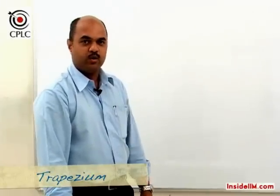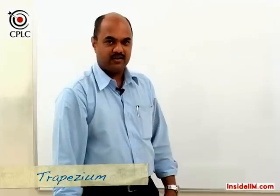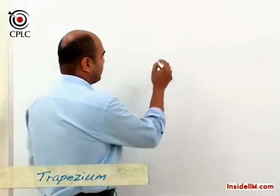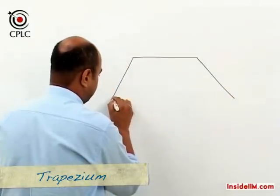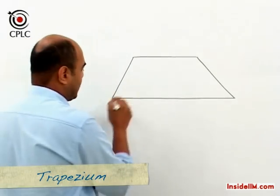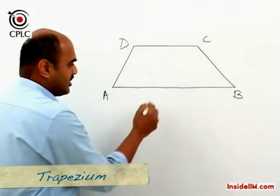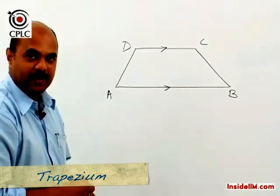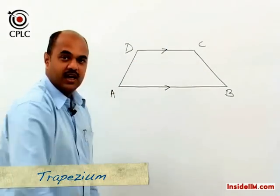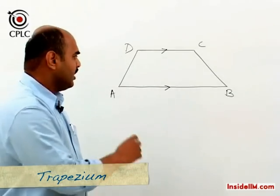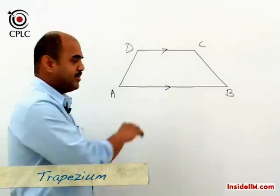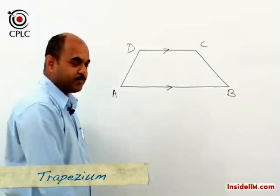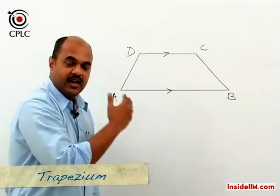The quadrilaterals seen so far had two pairs of opposite sides parallel. Let's now look at a type where only one pair of opposite sides is parallel — this is called a trapezium. In trapezium ABCD, AB is parallel to CD, but AD is not parallel to BC. The pair which is not parallel — AD and BC — are called the oblique sides. In a special case where the oblique sides are equal, meaning AD equals BC, such a trapezium is called an isosceles trapezium.